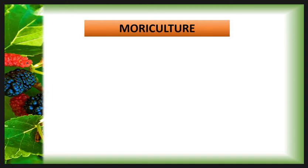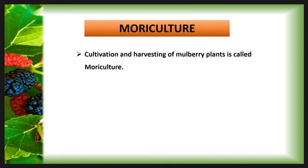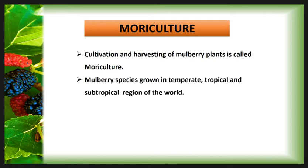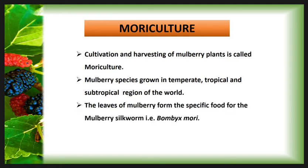We should know what is mori culture. Mori culture is the cultivation and harvesting of mulberry plants. Mulberry species grow in temperate, tropical, and subtropical regions of the world. The leaves of mulberry form the specific food for the mulberry silkworm, Bombyx mori. The variety of mulberry plants determines the quality of silk produced.